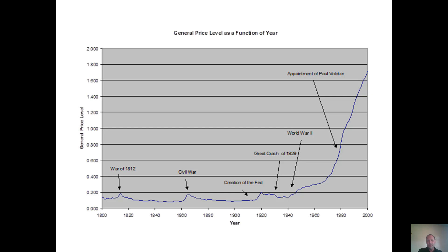The decrease in money printing in the late 1920s was inspired by agreements between U.S. and British central bankers who were worried about gold flows between the two countries. During the Great Depression in 1933, the U.S. defaulted on the gold standard, and Franklin Delano Roosevelt made it illegal for Americans to own more than five ounces of gold. They also seized all the gold holdings of most major banks — that was what Fort Knox was created to hold.